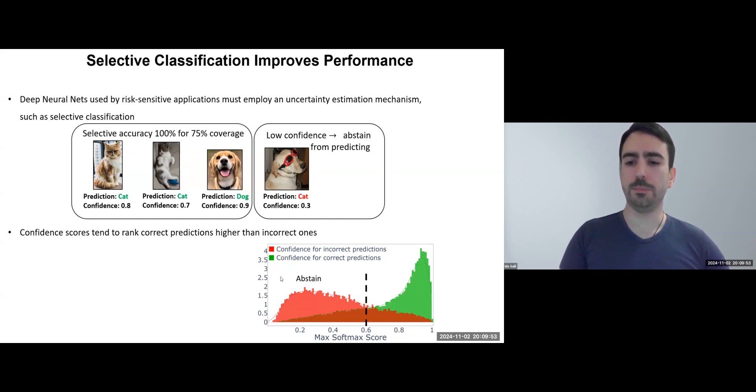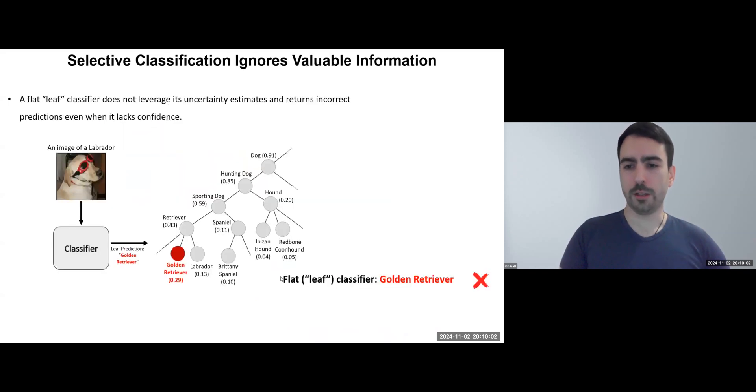Coverage is simply the percentage of predictions the model does not abstain from, in this case, 75%. However, selective classification has a drawback.